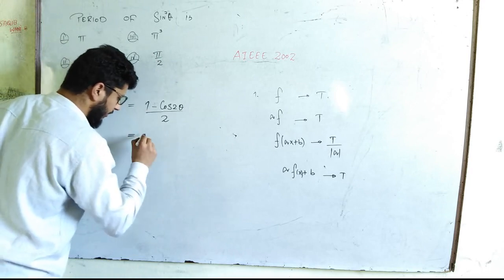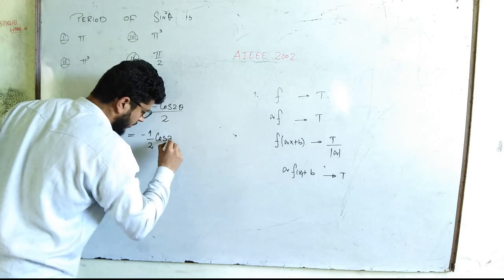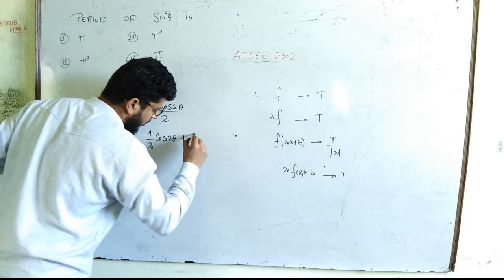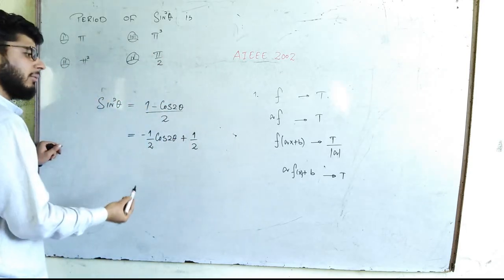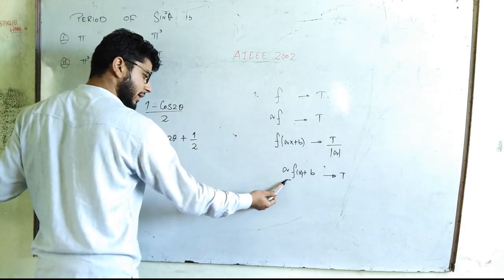Which can be written as minus 1 upon 2 cosine of 2 theta plus 1 upon 2. This means that you can write this one in this form.